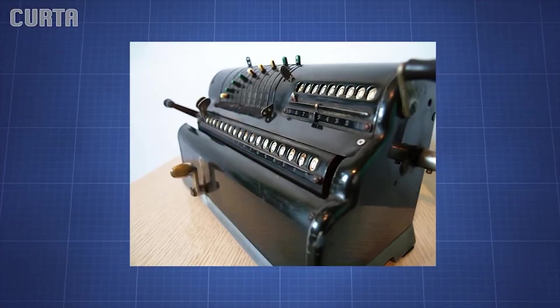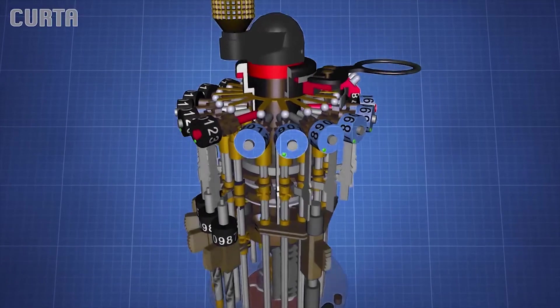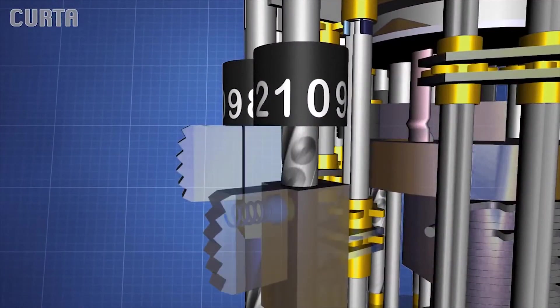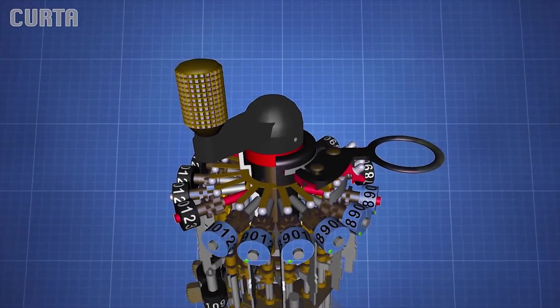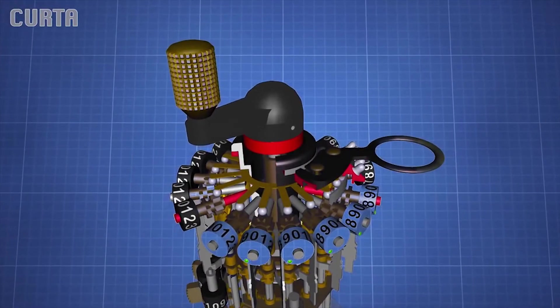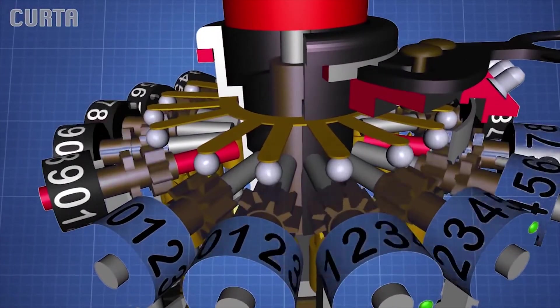Instead of having registers of numbers in his mechanical calculator like other designs, he created a step drum where each step corresponds to a number. He added another drum on the top of the first, but in reverse, allowing a simple shift of the device to switch between addition and subtraction through the use of mechanically imposed complementary calculation.